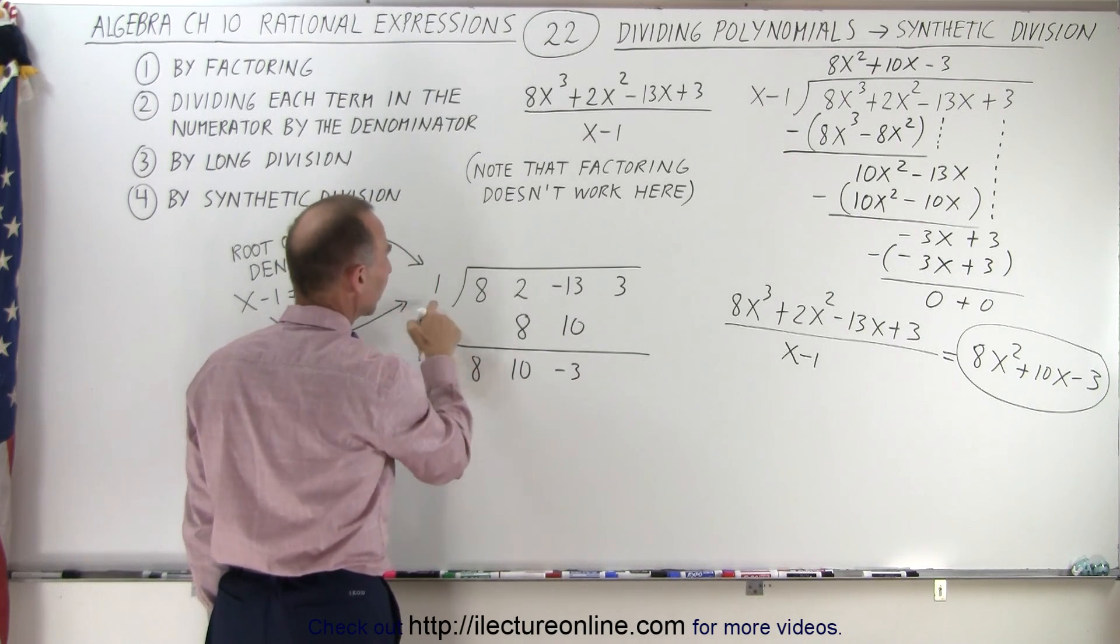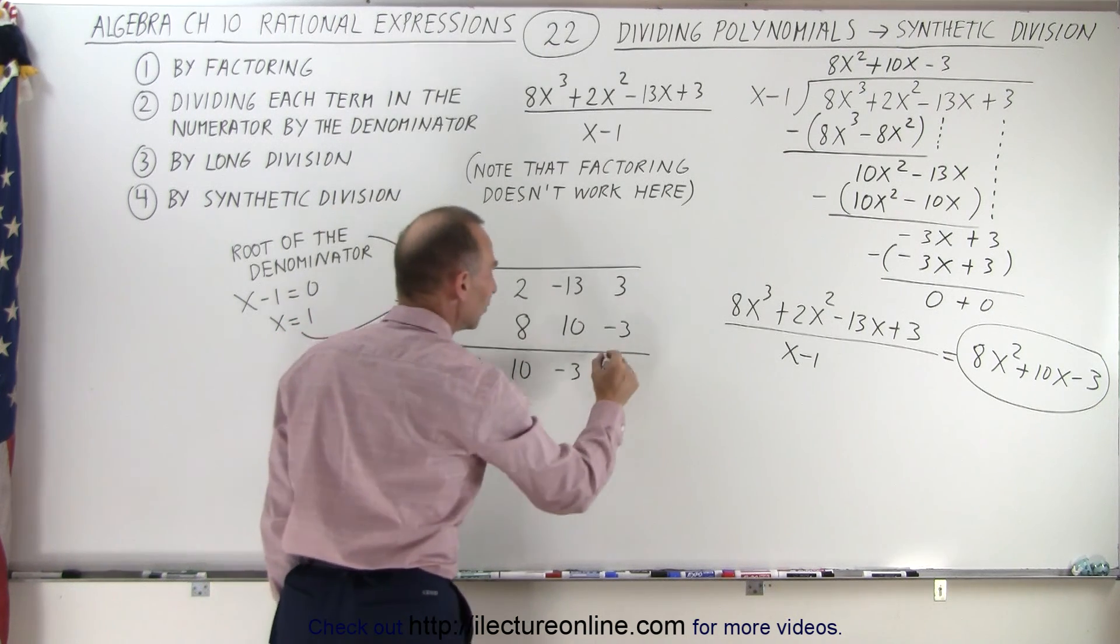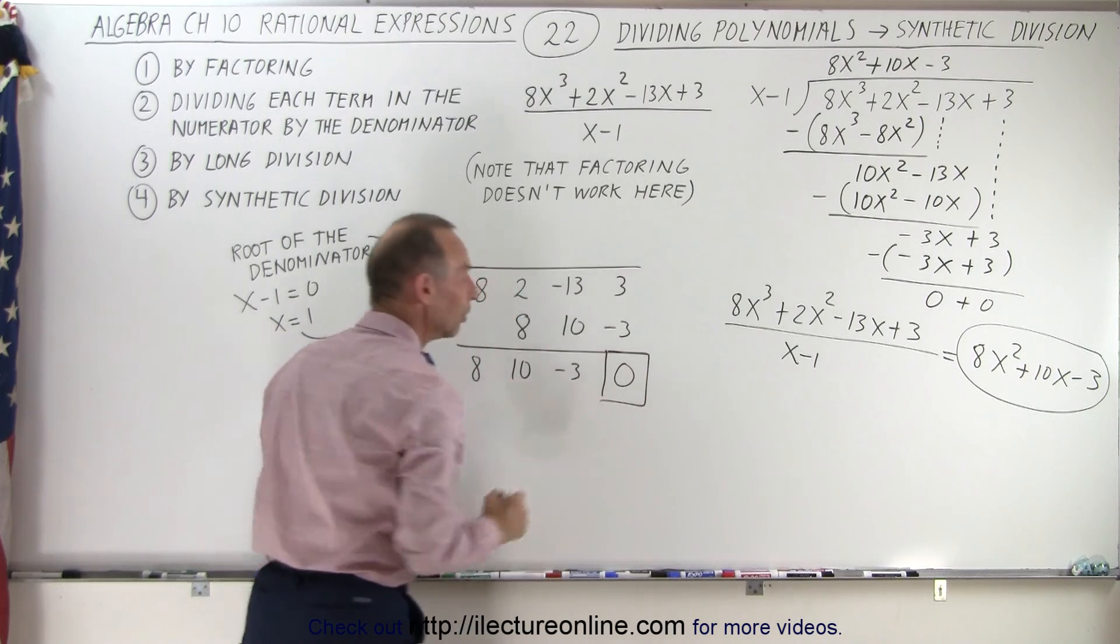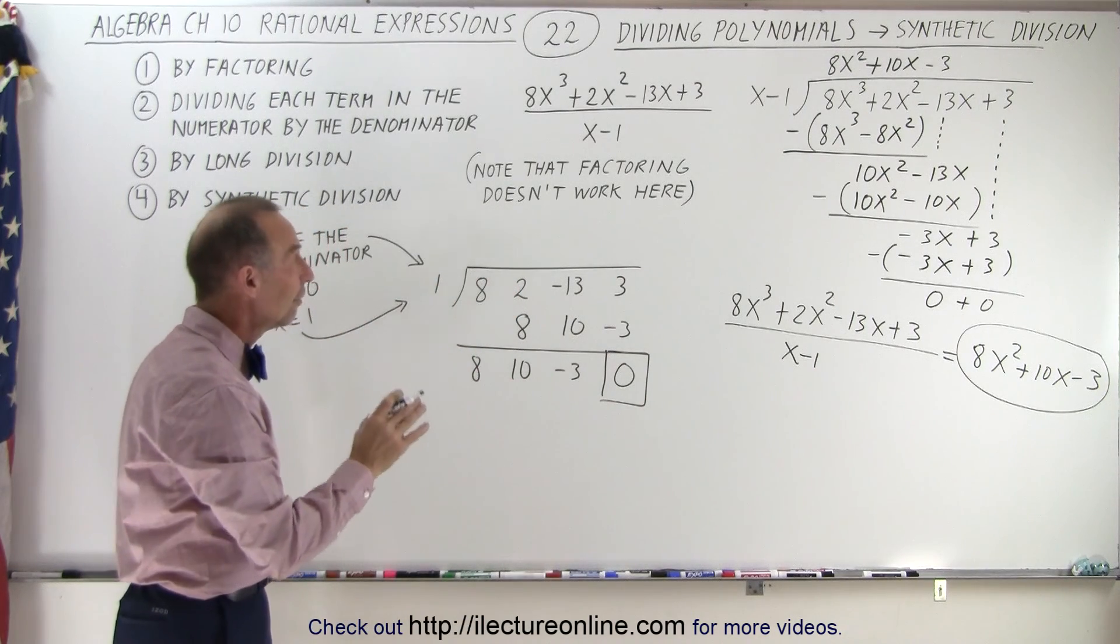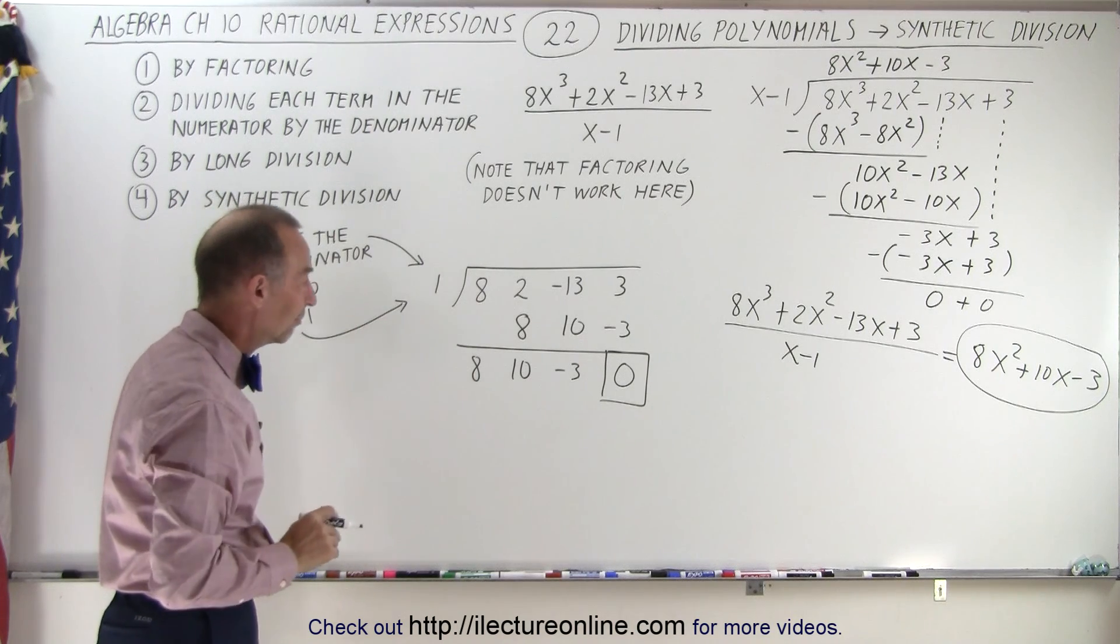then we multiply 1 times negative 3, we put it here, we add it together, we get 0. Now notice if this last number is 0, that means the denominator divides into the numerator exactly with no remainder left.